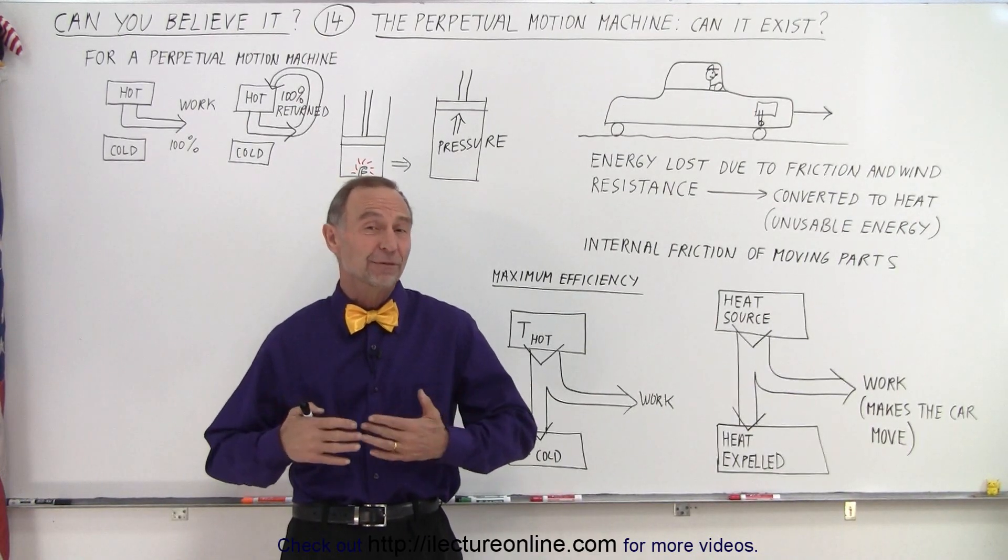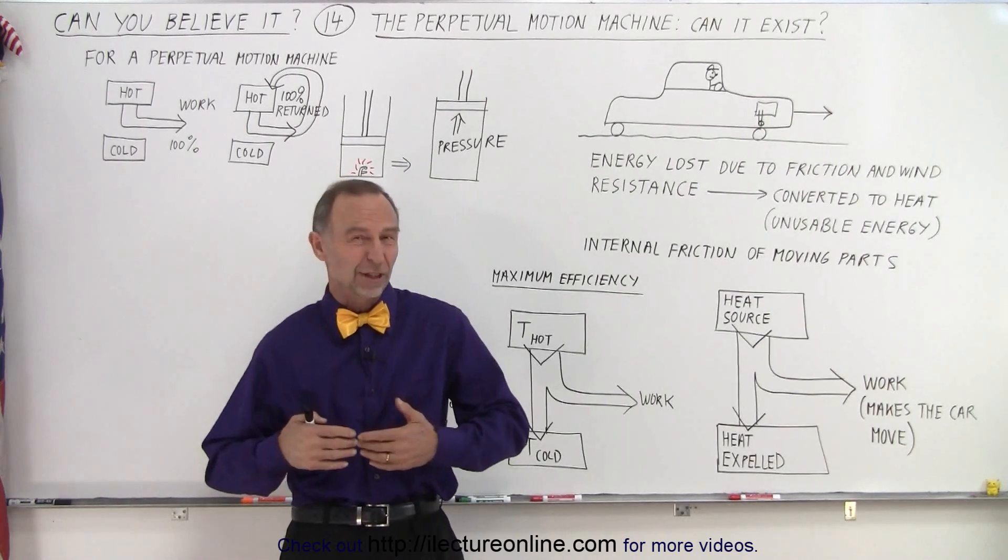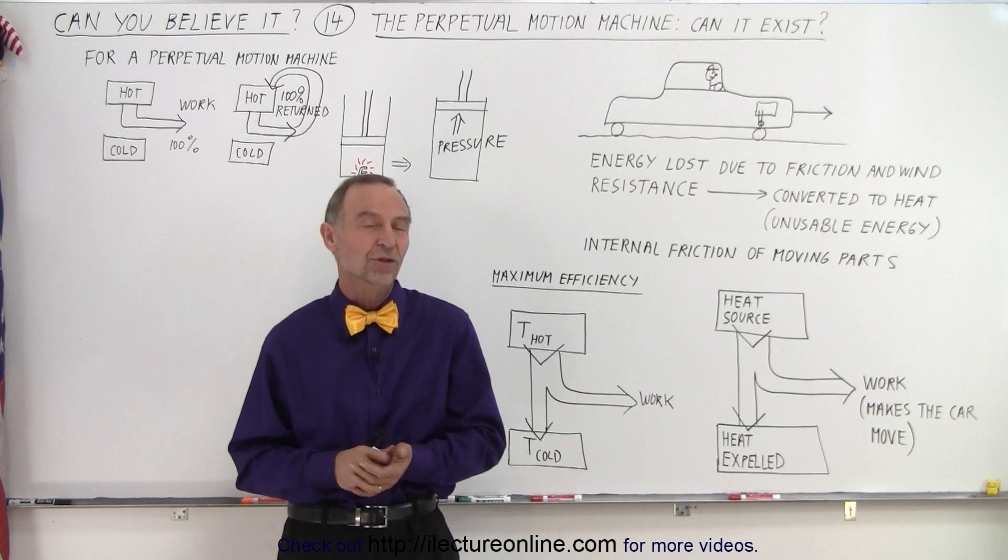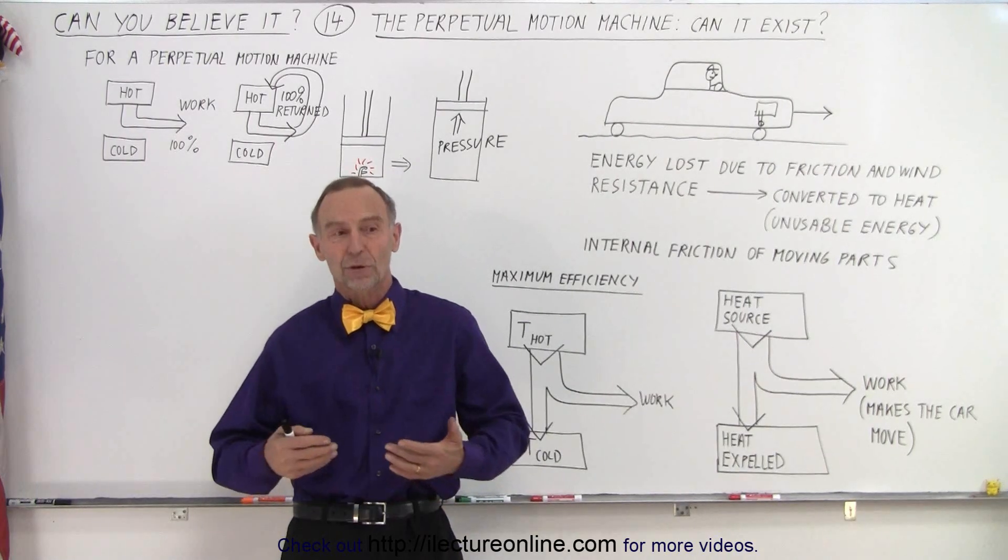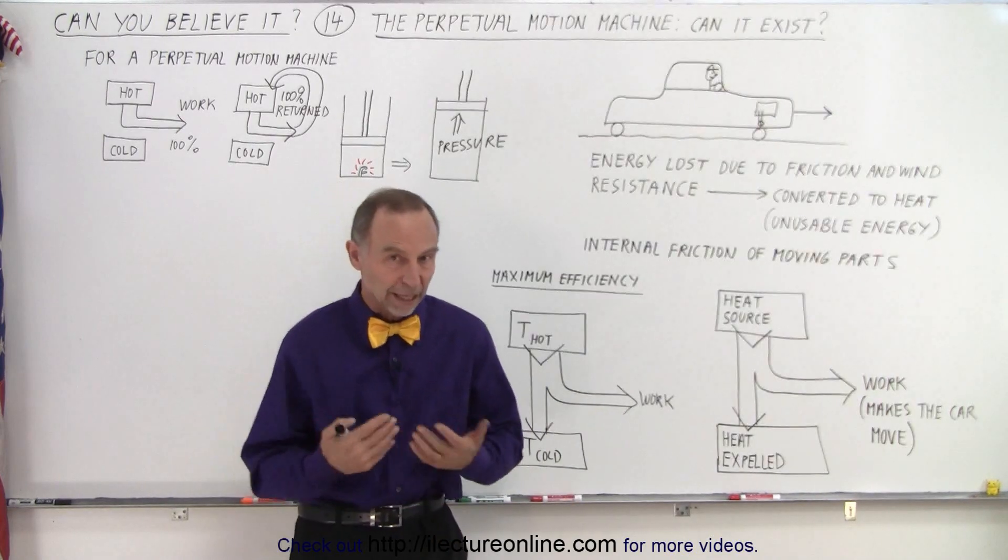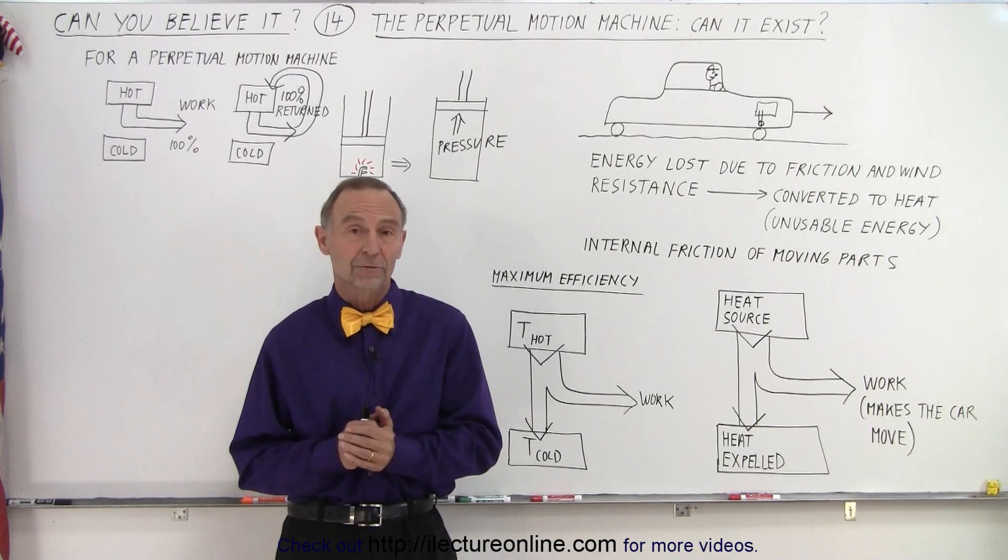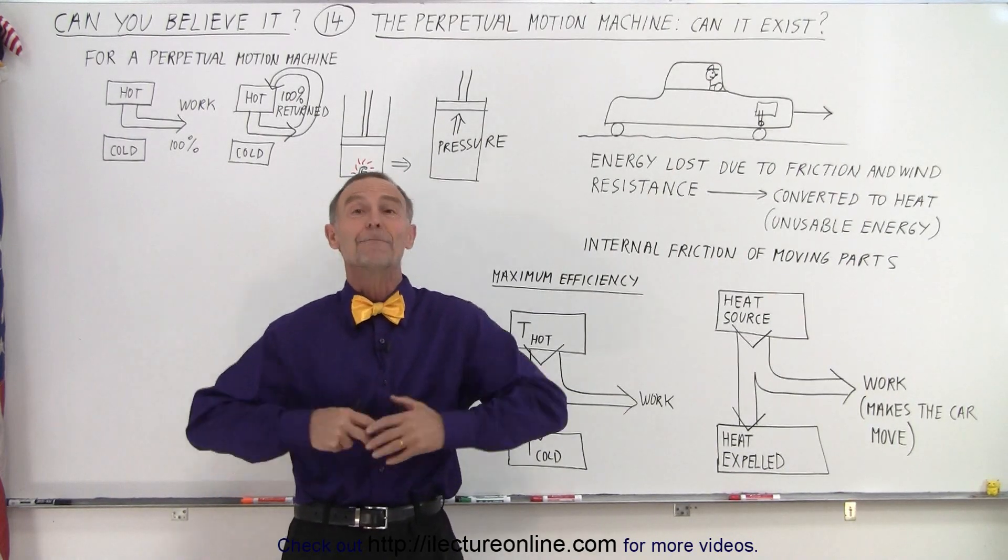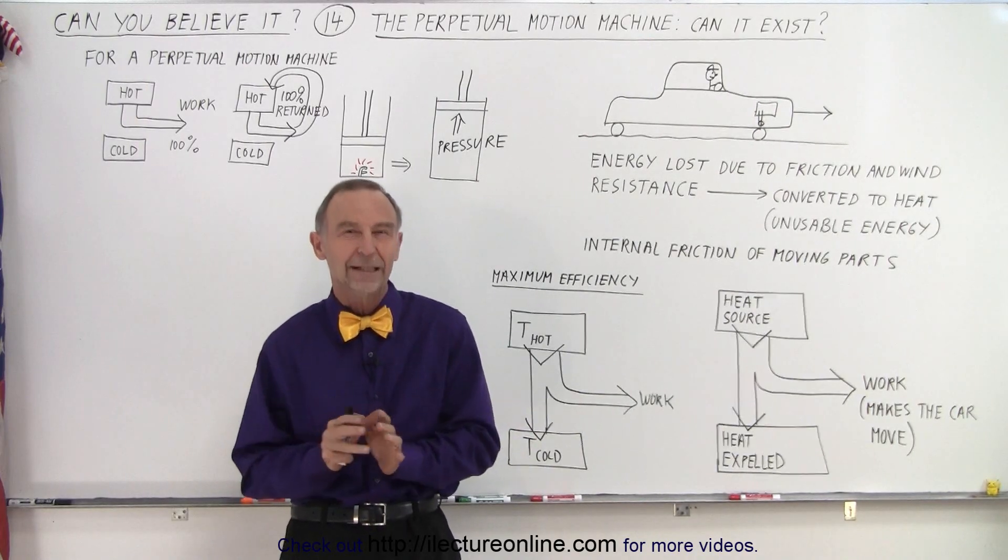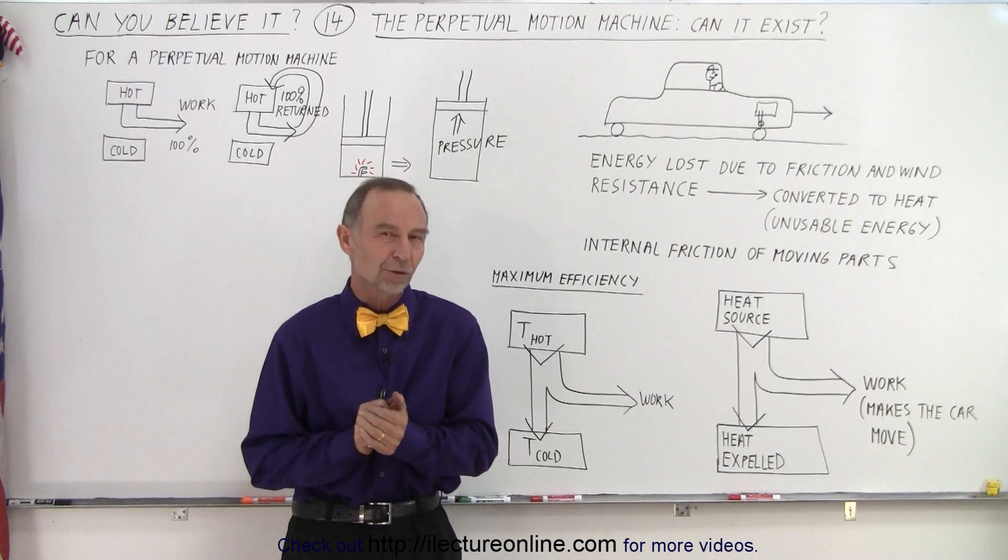Over the centuries, people have claimed that they've built perpetual motion machines, especially since the beginning of the Industrial Revolution when people began to produce all kinds of machines. The idea was that it would be wonderful to have a machine that could just keep going forever. Many people claimed, falsely and fraudulently, that they built perpetual motion machines. They knew they didn't, but they tried to hide it and portray themselves as inventors of these machines.